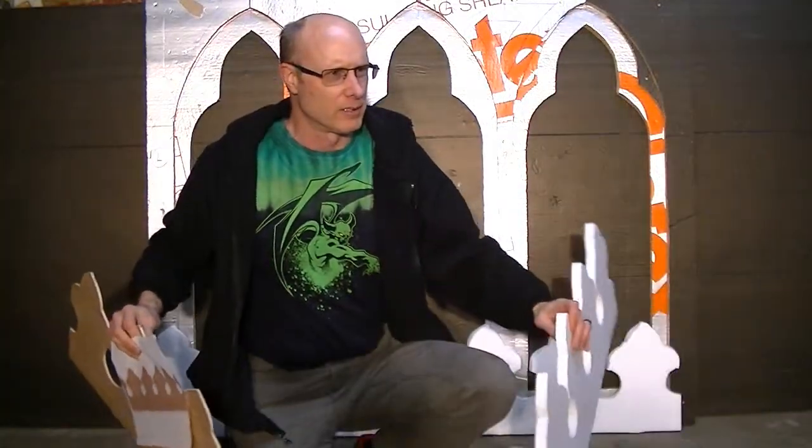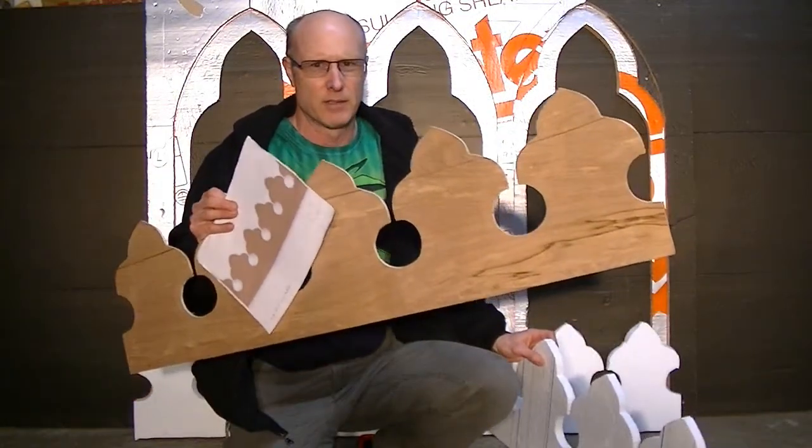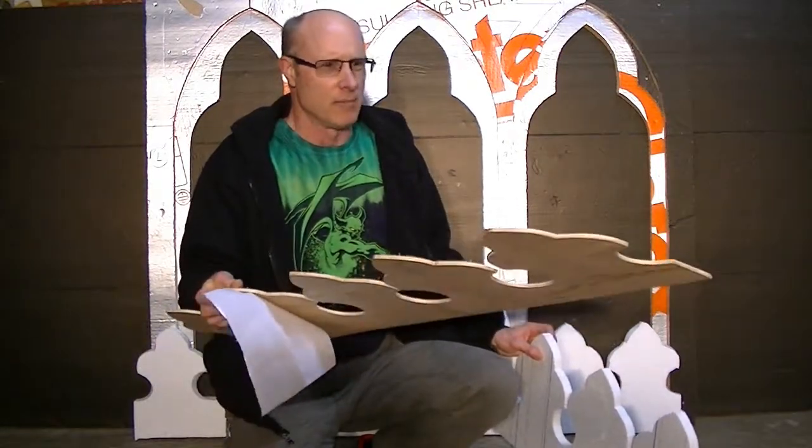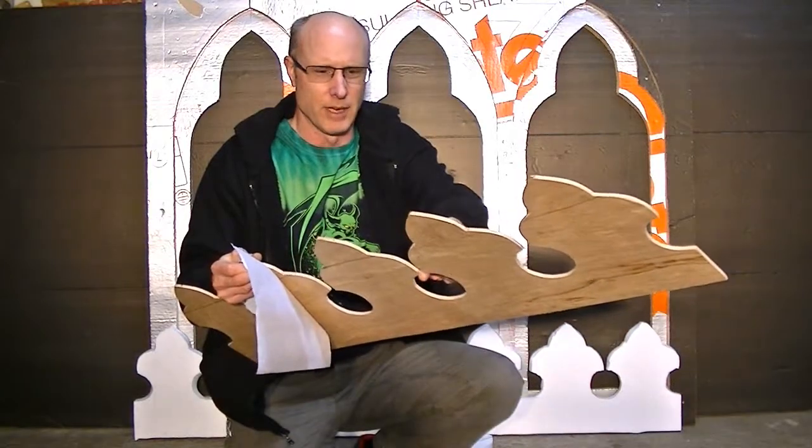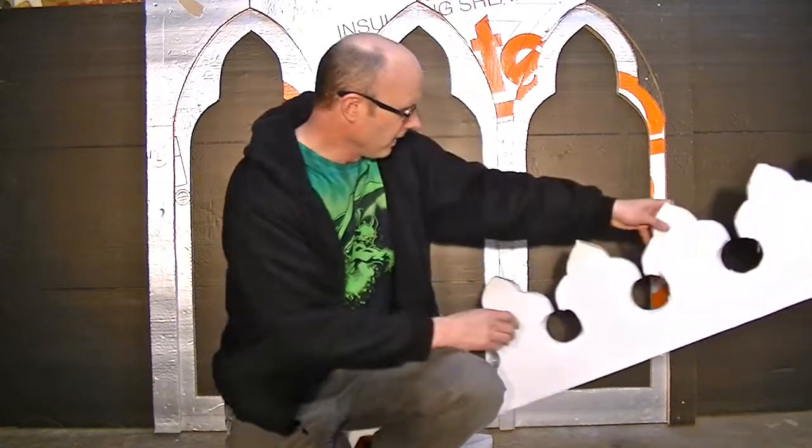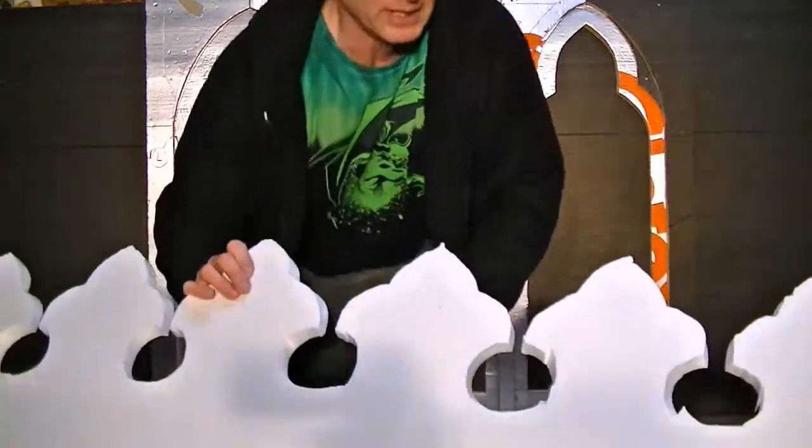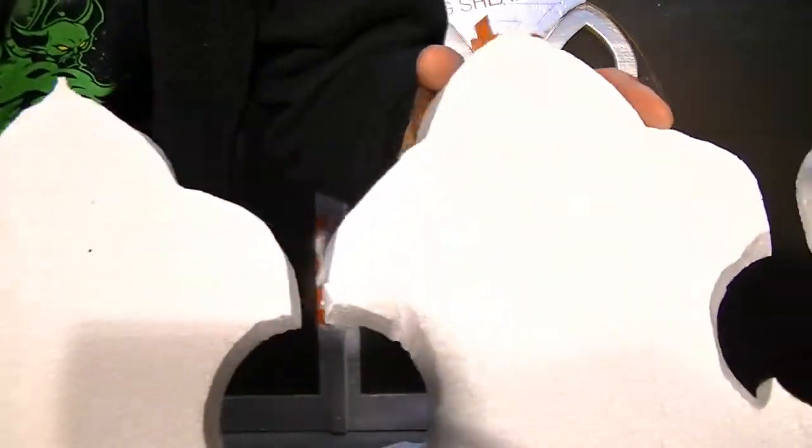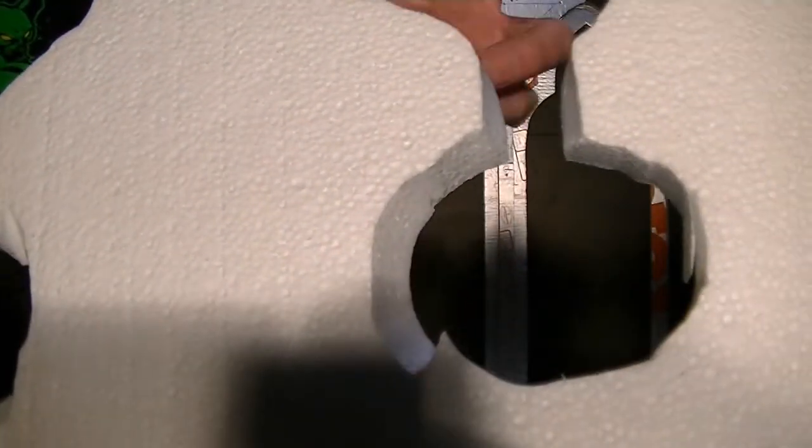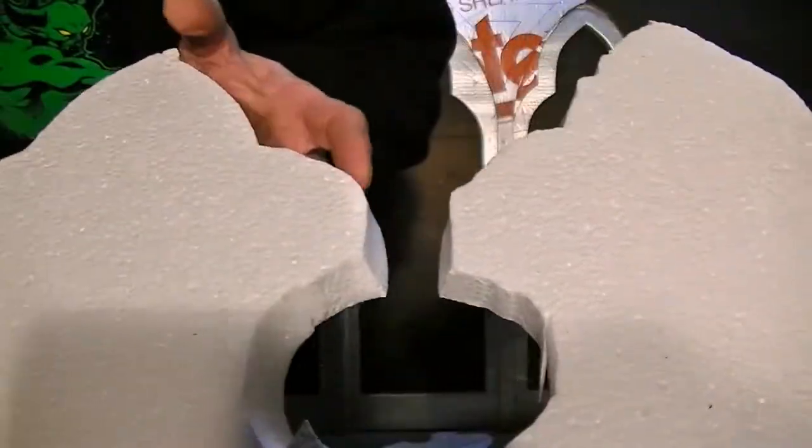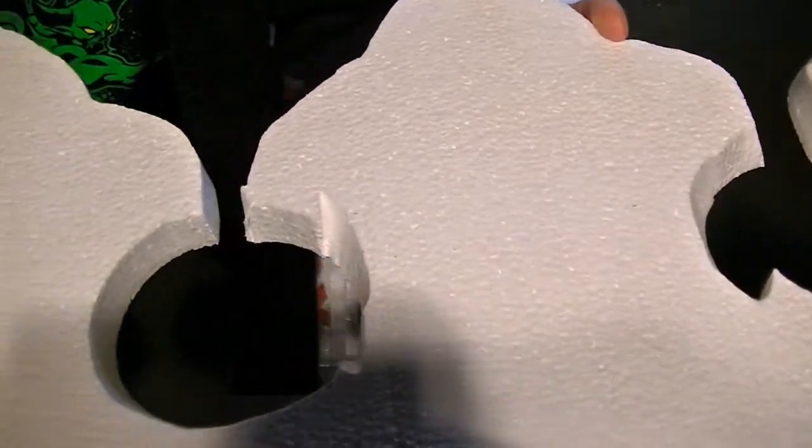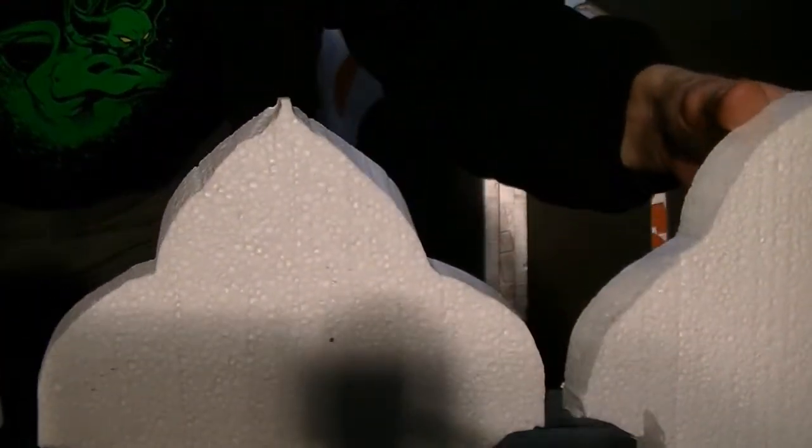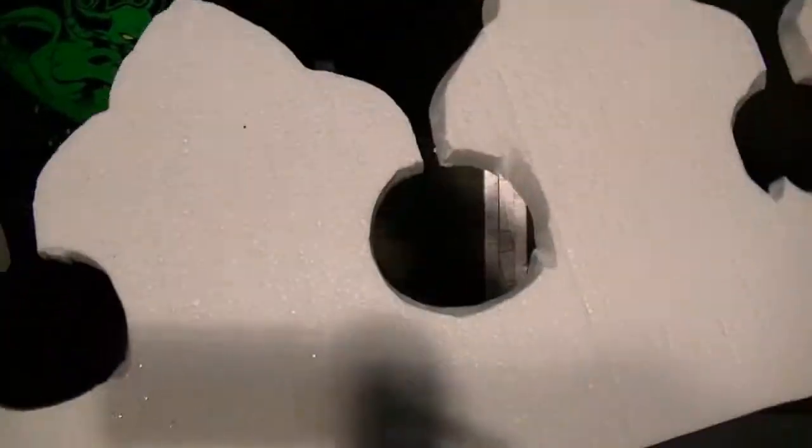One thing I learned about using the hot wire table was to have this template side down on the table with the wire running up against it. I just got a cleaner cut that way. I tried it first the other way and got some really ugly edges. Just weird stuff because the wire wouldn't run straight if I had the wood laying on top of the foam. So I had to lay the template down on the board and just kind of feel along, and it worked out a lot better. I got a lot cleaner edges than this. This is an ugly scrap piece, my test piece I guess.